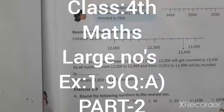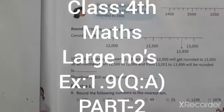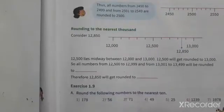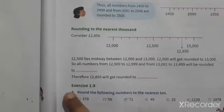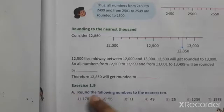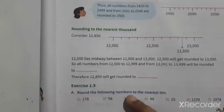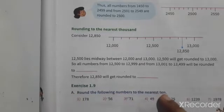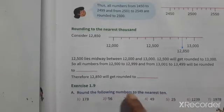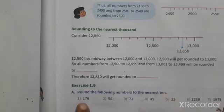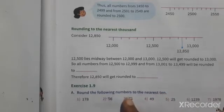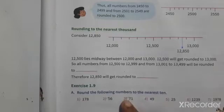Exercise 1.9, page number 15. The aim is to round the following numbers to the nearest tens. The number given is 178. The second and third problems are homework. We will try the first, fourth, fifth, sixth, and seventh.